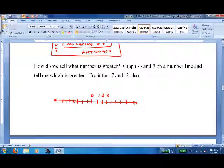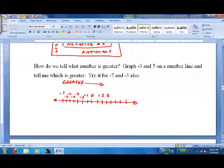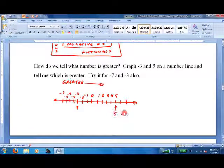Put 0 in the middle. You know that it goes 1, 2, 3 positive one way, negative 1, negative 2, negative 3 the other way. And greater is on the right side. So, which is bigger, negative 3 or positive 5? Well, here's positive 5. Here's negative 3. So, 5 is greater than negative 3.